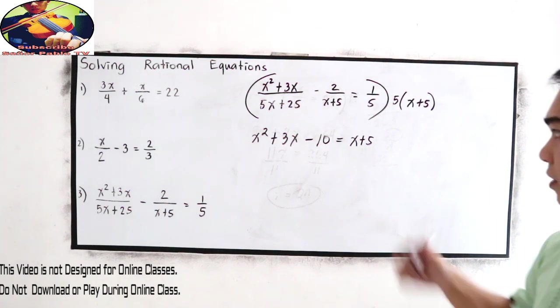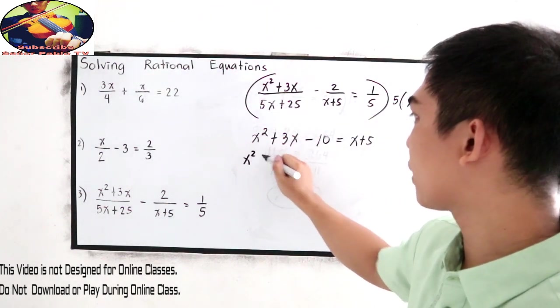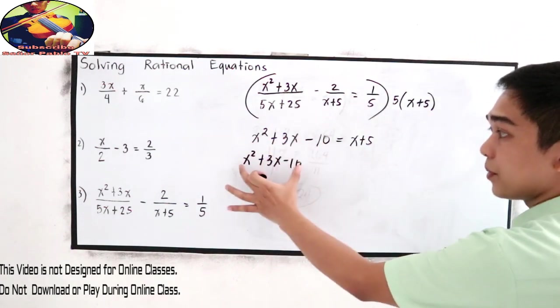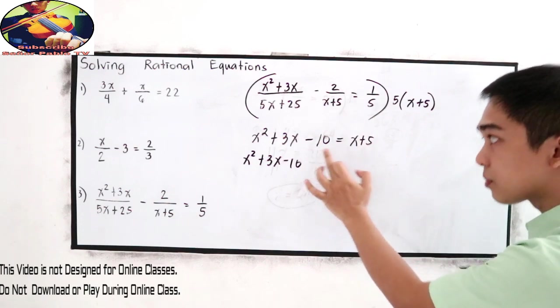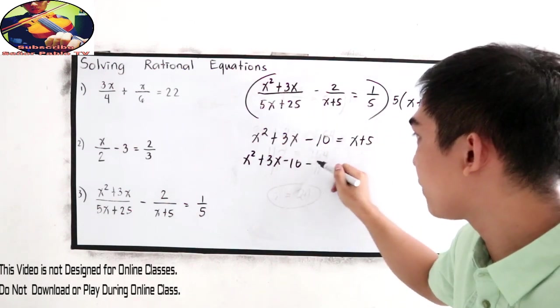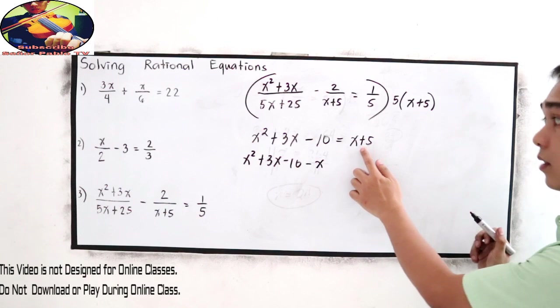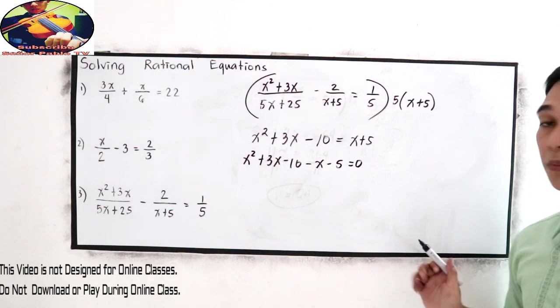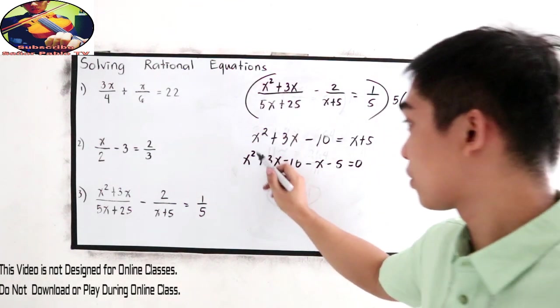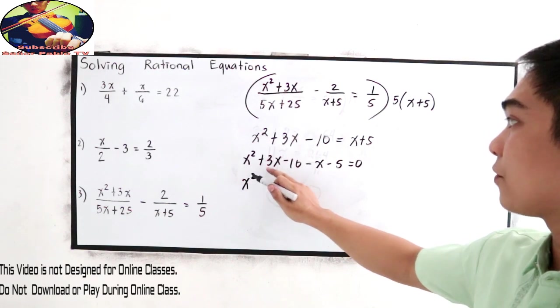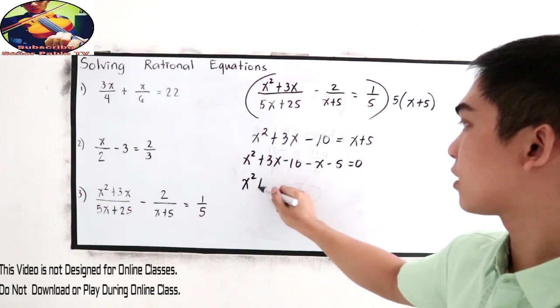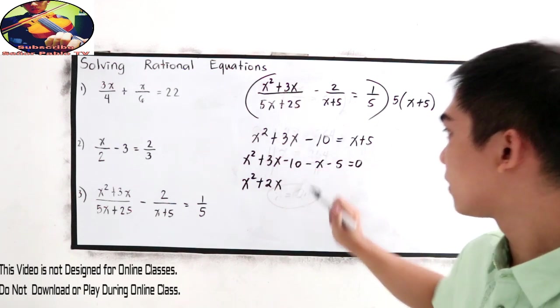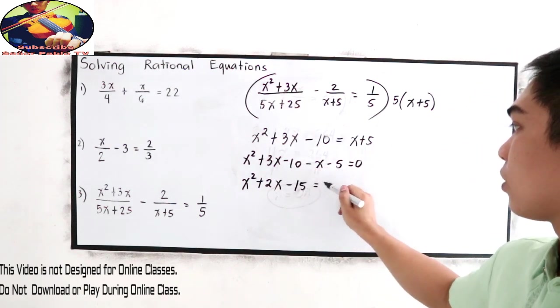Combine like terms. Transpose on the right side. x squared plus 3x minus 10. Just copy, then transpose on the right side. The positive x will become negative x. The positive 5 will become negative 5 is equal to 0. Combine like terms. We have x squared, positive 3x minus x, that's positive 2x, negative 10 minus 5, negative 15, is equal to 0.